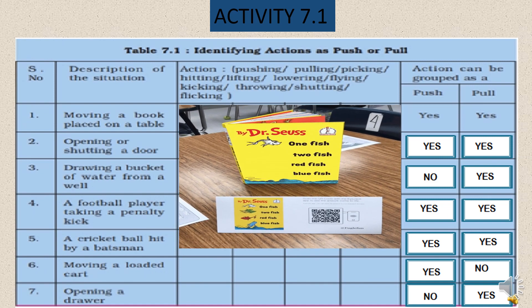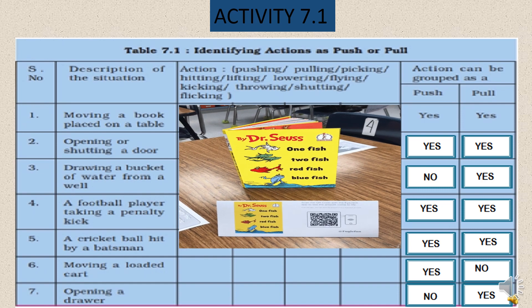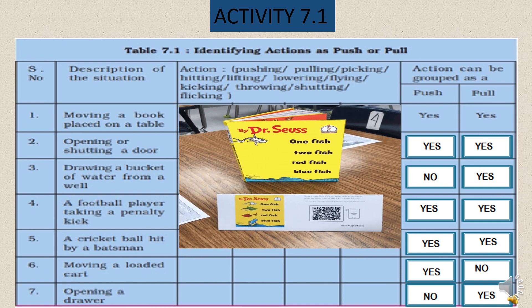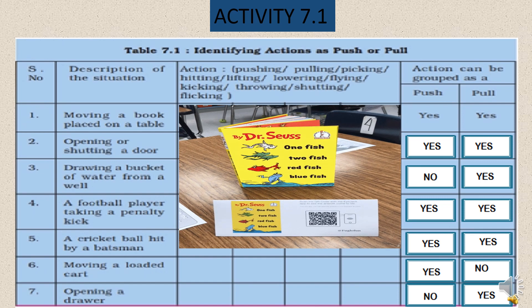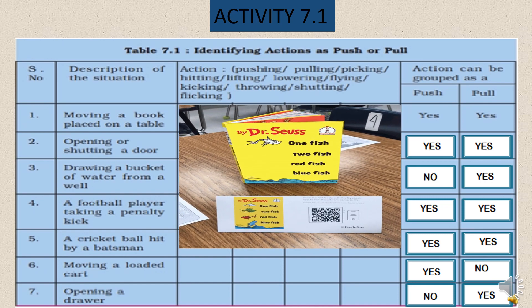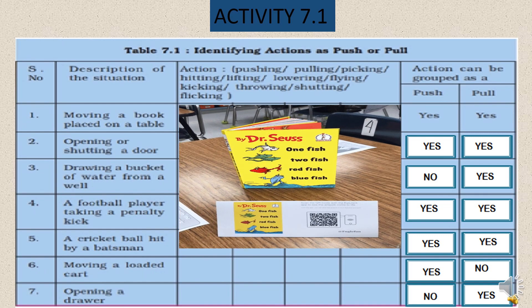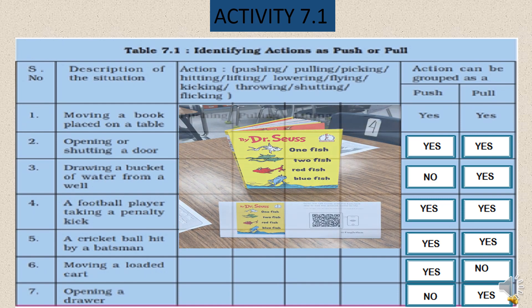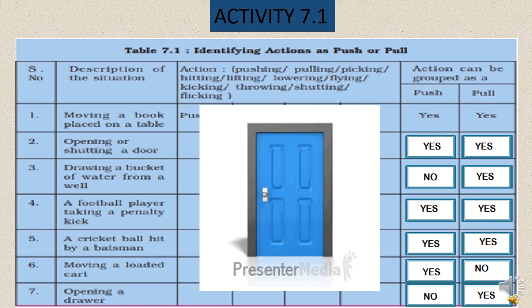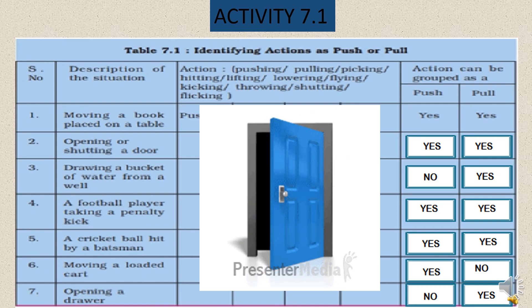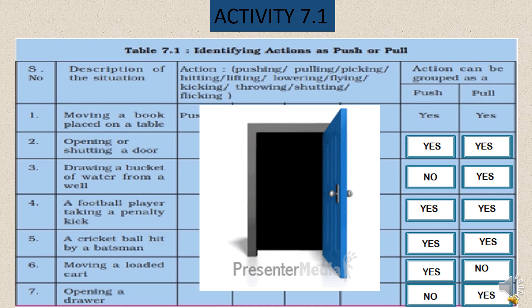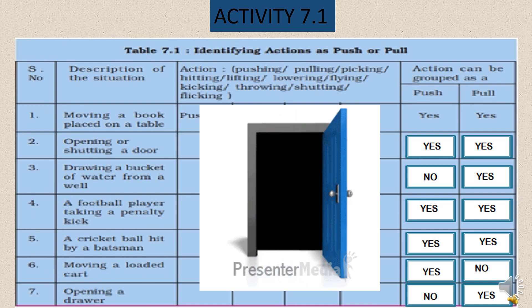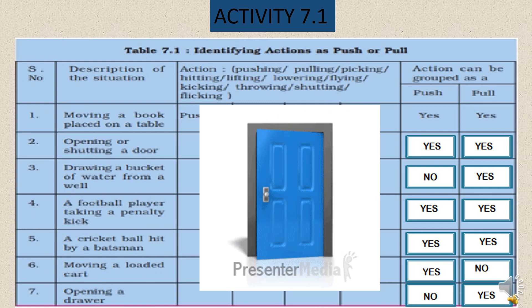The first example is moving a book placed on a table. To move a book on a table, we can push it or pull it — both actions are possible. So I have written yes for both push and pull. The second example is opening or shutting a door. To open or shut a door, we push it as well as pull it, so I have written yes for both push and pull.